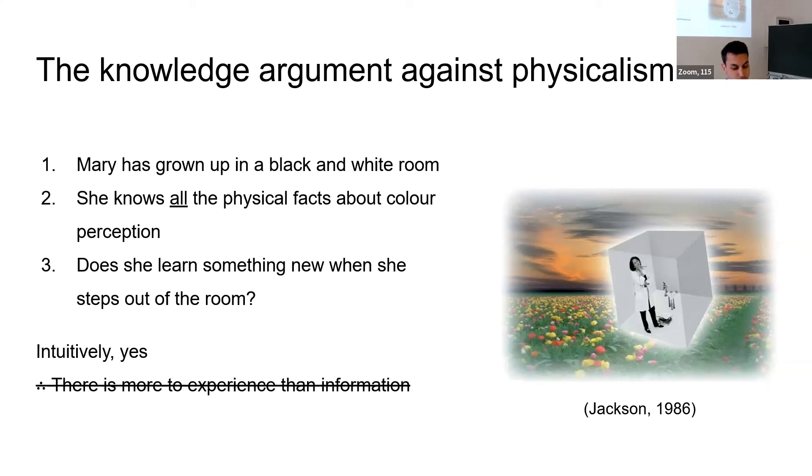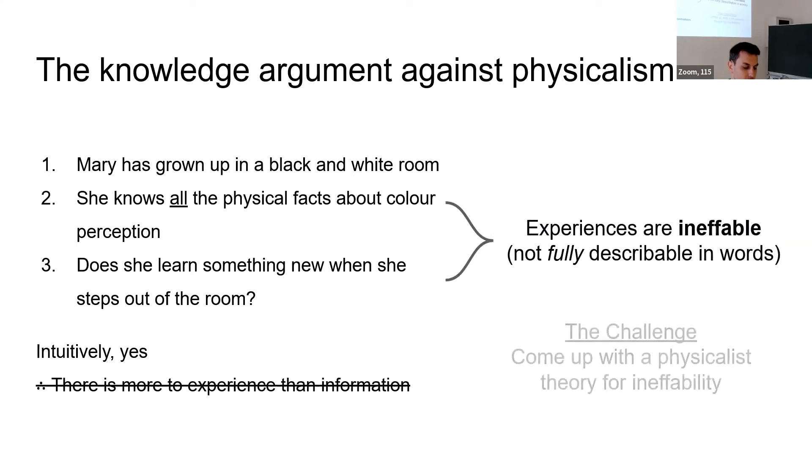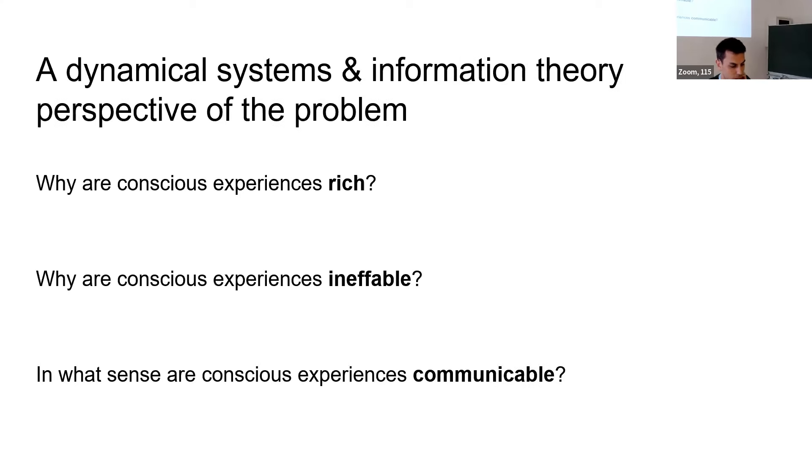Therefore, the conclusion, in my view, that the knowledge argument tries to push forward is that if she still learns something, even though she knew everything, well, that means what she learns sort of isn't information, in a sense. And if it's not information, well, then how could it be consistent with physicalism? So if you don't want to reject physicalism so easily and kind of want to push back against the knowledge argument, the challenge becomes maybe to give a physicalist explanation of ineffability.